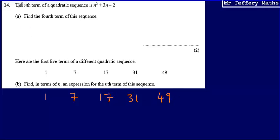This is question 14. Here I'm told that the nth term of a quadratic sequence is n-squared plus 3n minus 2. I'm asked to find the fourth term of this sequence.